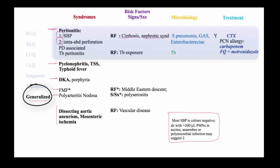People with end-stage kidney disease receiving peritoneal dialysis are particularly susceptible to peritonitis associated with infected catheters, and tuberculosis may similarly present as peritonitis. The treatment of spontaneous bacterial peritonitis is traditionally with ceftriaxone, or carbapenem, or fluoroquinolone plus metronidazole in the penicillin-allergic patient.